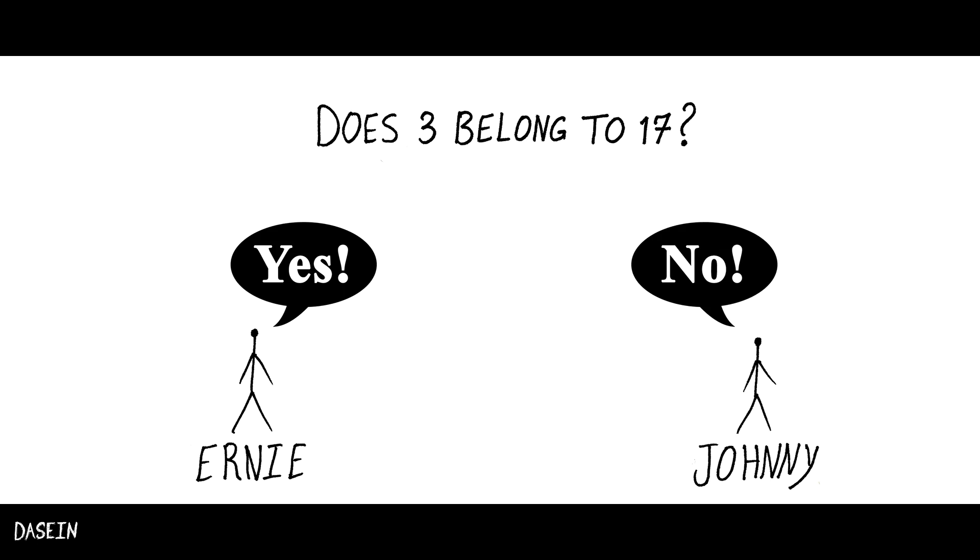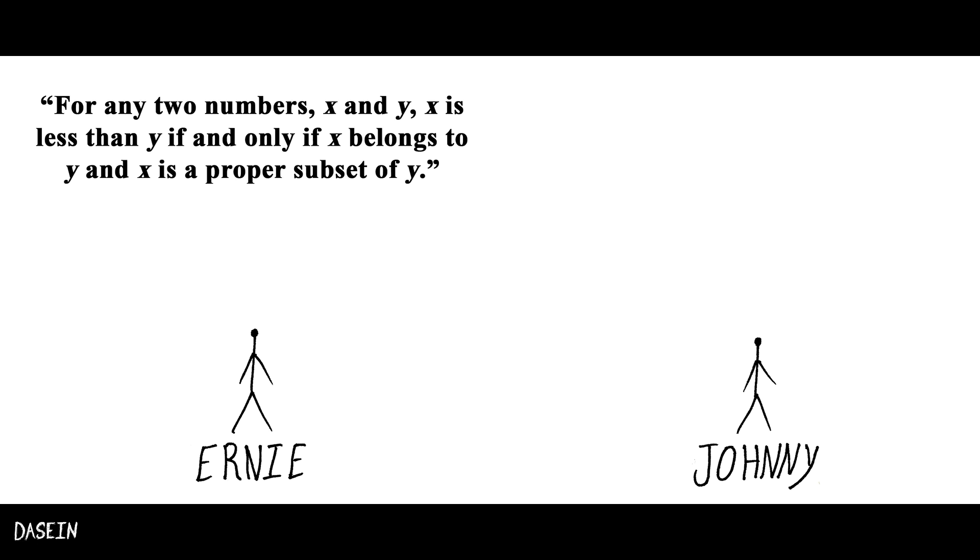Ernie's theorem states that for any two numbers x and y, x is less than y if and only if x belongs to y and x is a proper subset of y. Based on this theorem, 3 belongs to 17 because 3 is less than 17.